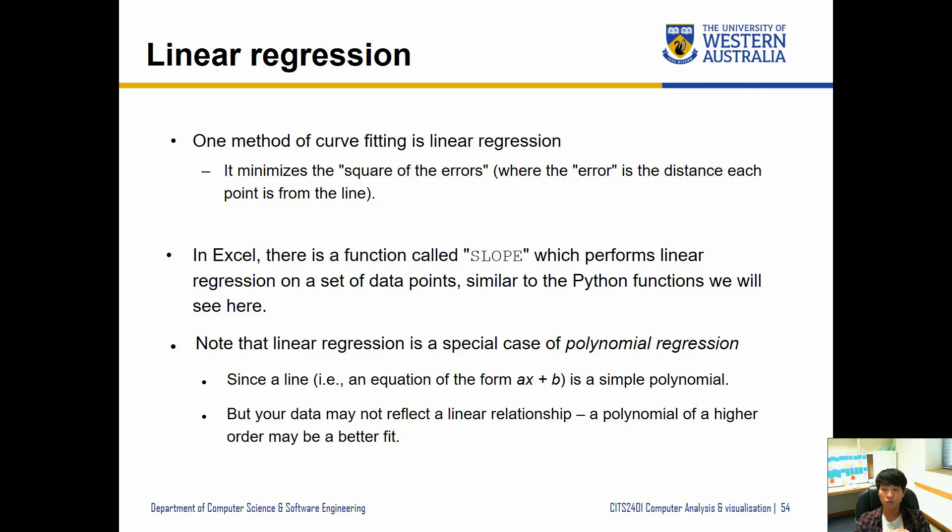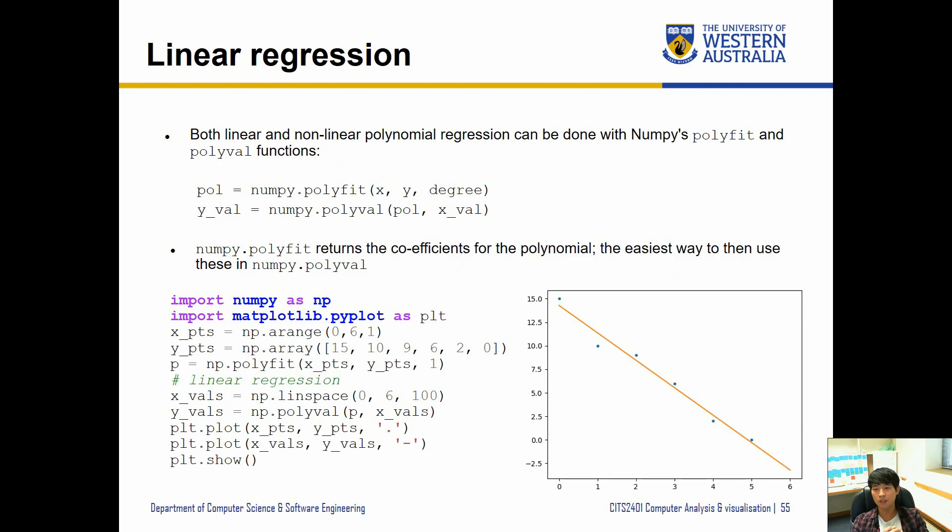And we can do something similar in Python. So note that linear regression is a special case of polynomial regression. Basically it has an order of one polynomial, but your data may not reflect a linear relationship, so when that does happen we will use a higher order of polynomial to do that, but we'll start with the linear for now.